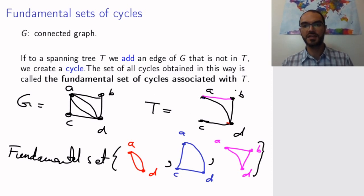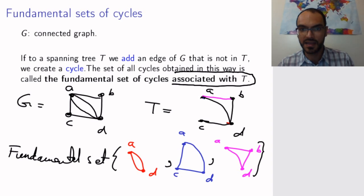So, these three cycles constitute a fundamental set of cycles associated with T. And this associated with T is important. So, if I had taken a different spanning tree, remember that to the same graph, you can have several different spanning trees, then I would get a whole different set of cycles. So, this is something that is specific to T. So, for this choice of spanning tree of my graph, I get this fundamental set of cycles. Now, any cycle in this graph, somehow you can get by gluing together and removing edges in these cycles.